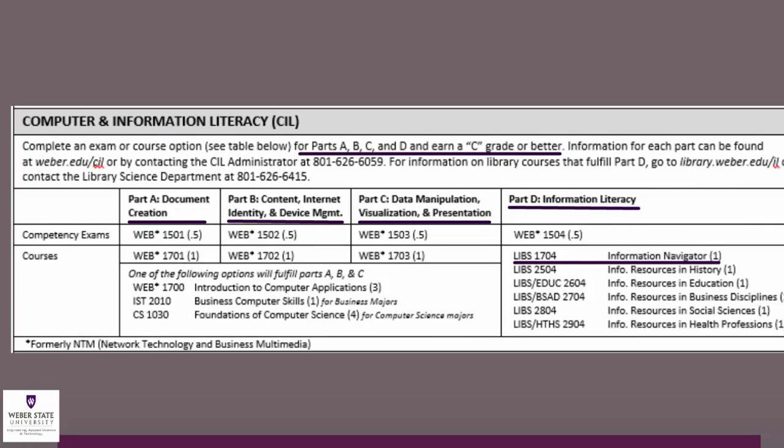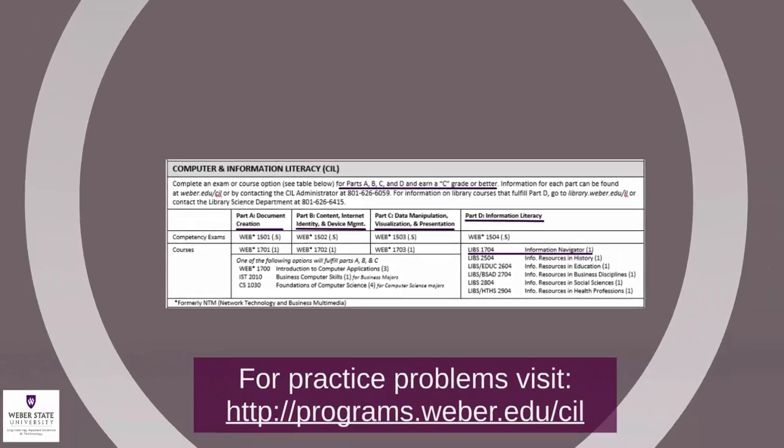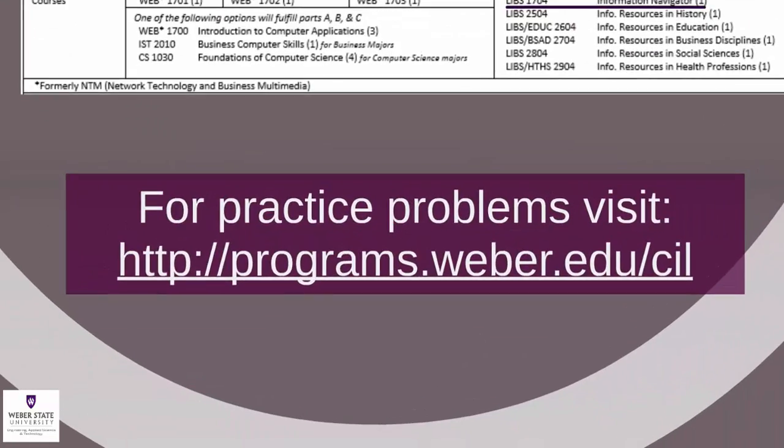The next requirement is Computer and Information Literacy, which is broken into four parts. The topics covered are Part A, Document Creation; Part B, Content, Internet Identity and Device Management; Part C, Data Manipulation, Visualization and Presentation; and Part D, Information Literacy. Students can fulfill each part A through D by receiving a credit grade on each proficiency exam option, or by taking the course options and getting a C or better, or a combination of the two. If you choose the course option for Part D, we recommend Library Science 1704. If you have questions regarding the Computer Information Literacy requirement or would like to look at exam practice problems, go to the website shown on the screen.